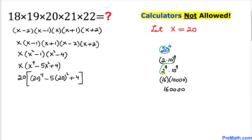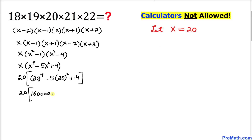20 can be written as 2 times 10, so 20 to the power 4 is 2 to the power 4 times 10 to the power 4. 2 to the power 4 is 16, and 10 to the power 4 means four zeros, so multiplying gives us 160,000. And 20 squared is 20 times 20, which is 400.